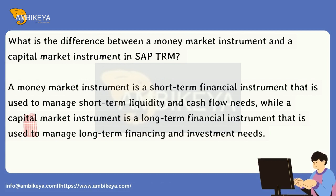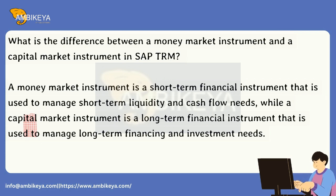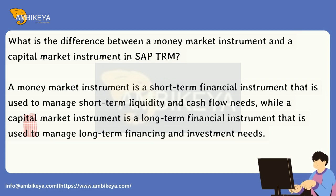What is the difference between a money market instrument and a capital market instrument in SAP TRM? A money market instrument is a short-term financial instrument used to manage short-term liquidity and cash flow needs, while a capital market instrument is a long-term financial instrument used to manage long-term financing and investment needs.